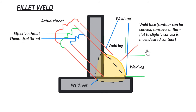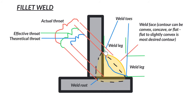The weld face is in between the toes. For fillet welds, this is where we can talk about our contour being convex, concave, or flat. Flat to slightly convex is the most desired contour — flat is good, a little convexity is okay, but a lot of buildup is too much, it's a waste of metal and time, and it could have negative stresses. The same goes for concavity, where the bead comes down like a hollow — that can possibly lead to cracks at the toes.